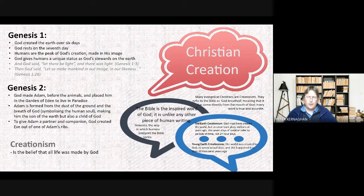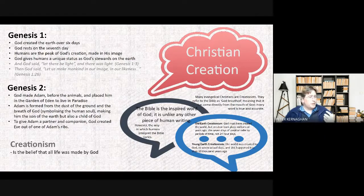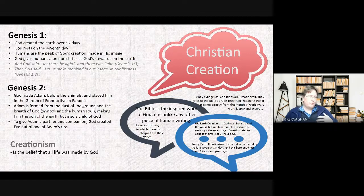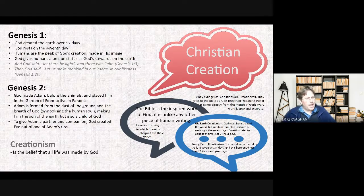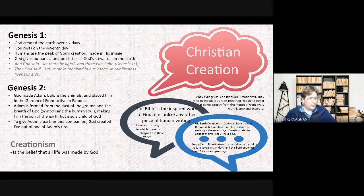Genesis 2 is also a story of creation. Notice it begins with God creating Adam — the animals come along later, brought to Adam to be named. God moves straight from creating the world to creating Adam and placing him in a garden of paradise with responsibility to look after it as a good steward. Adam is made from the dust of the ground and the breath of God, symbolizing the human soul — making him both a son of the earth and a child of God.